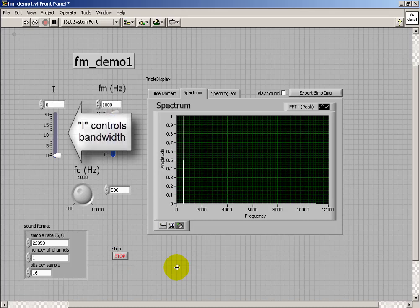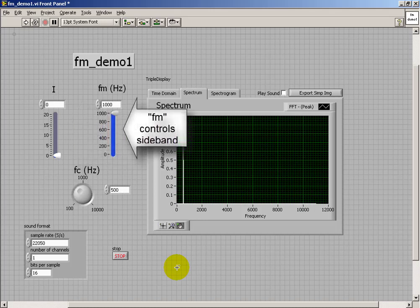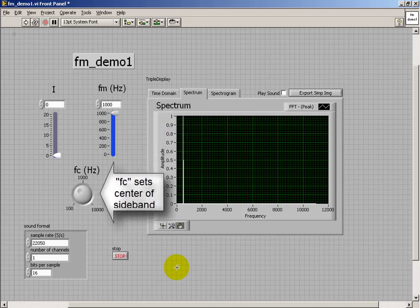So in summary, we say that the modulation index controls the bandwidth of the sound. The modulation frequency controls the side band spacing. And the carrier frequency sets the center of our side band cluster.